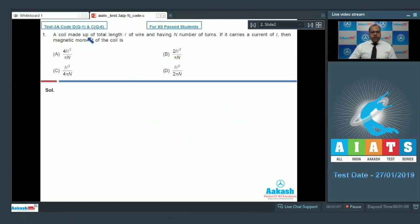A coil made up of total length L of wire and having N number of turns. If it carries a current of I then magnetic moment of the coil is. So the total length is L. So L is equal to, let the number of turns in the coil is N and its radius is R. So I can write N into 2πR. So from here we get the value of R that is equal to L divided by 2πN.